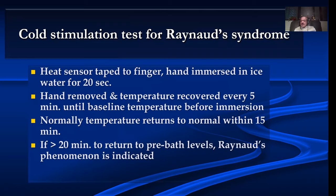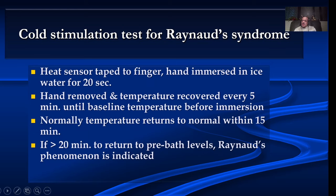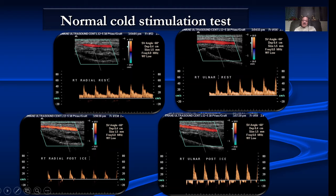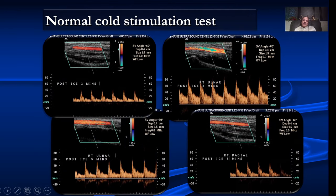There is also a cold stimulation test for Raynaud's syndrome. When suspecting a systemic disorder like SLE and the patient has clinical Raynaud's syndrome, we ask the patient to hold ice in the hand for about 15 seconds. After holding the ice, we see a very high resistance waveform with reversal of flow in diastole. In a normal patient, after one to three minutes of releasing the ice, waveforms return to normal — often with a higher diastolic flow. This is a normal response to cold stimulation.